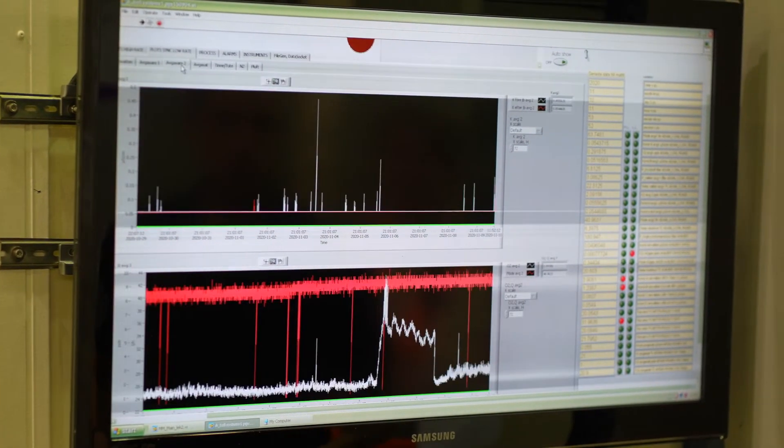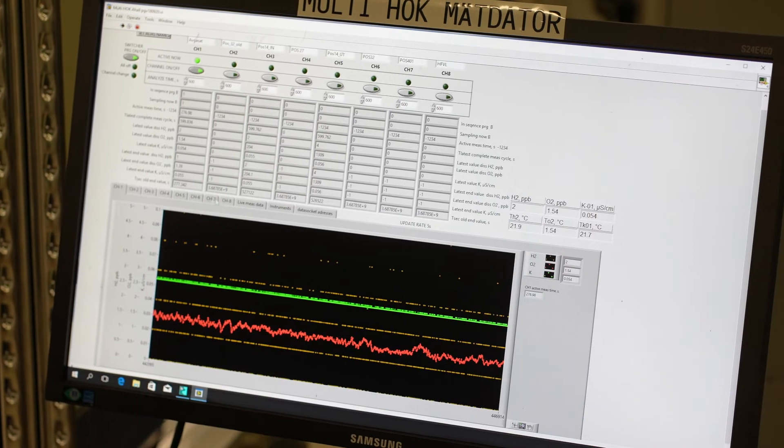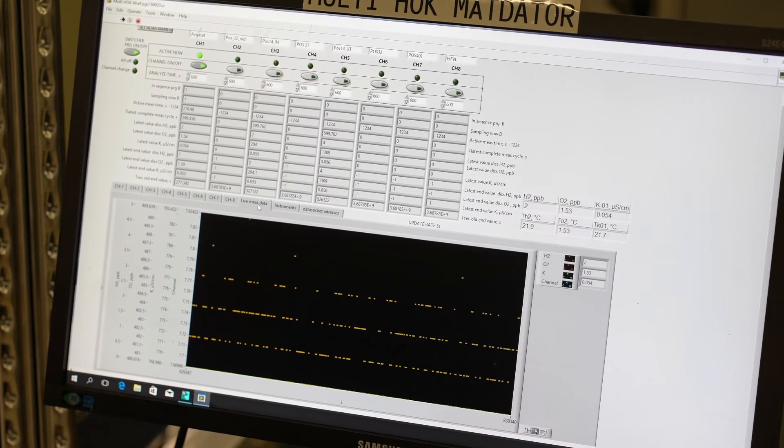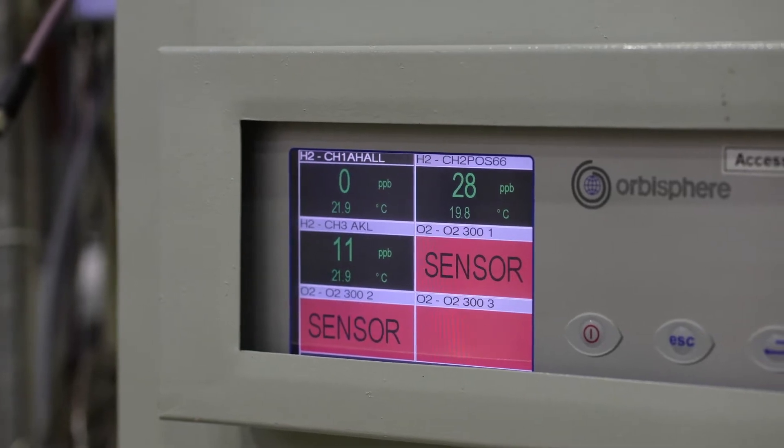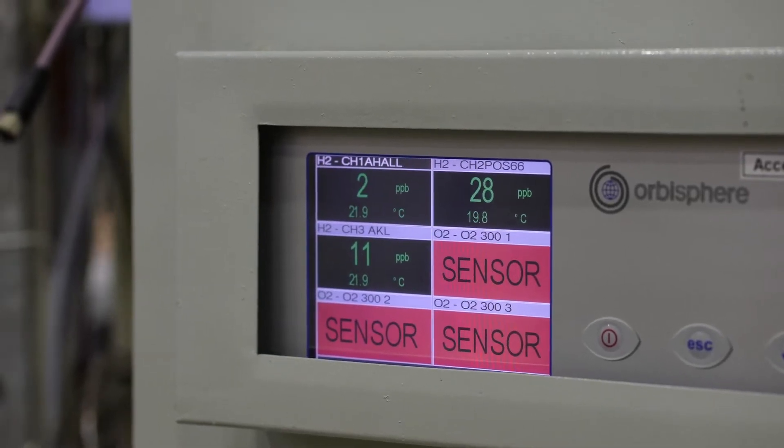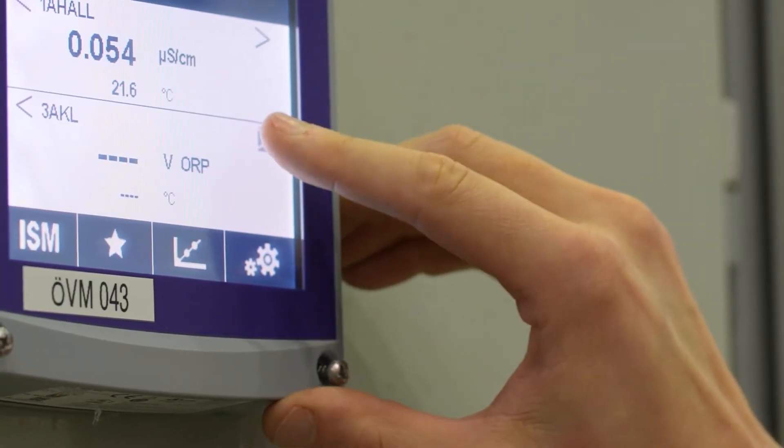The laboratory is equipped with an in-house developed PC-controlled, multi-channel valve regulated water chemistry monitoring system. The system measures conductivity, dissolved hydrogen, and oxygen in water from the various test positions in the laboratory.